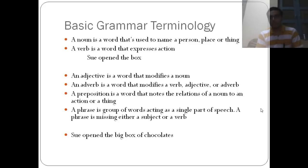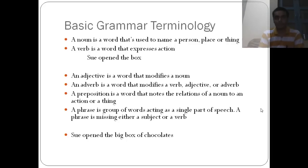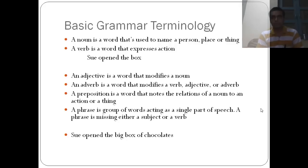Let me explain why modifier placement is important. In 'Sue open the big box of chocolates,' if I move 'big' to say 'big Sue open the box of chocolates,' it would mean that Sue is big. If I say 'Sue open the box of big chocolates,' it means the chocolates are big. So 'big' is an adjective modifying 'box,' and it should be placed close to 'box.' We'll look at tougher sentences and cases of modification of a whole sentence at a later stage.